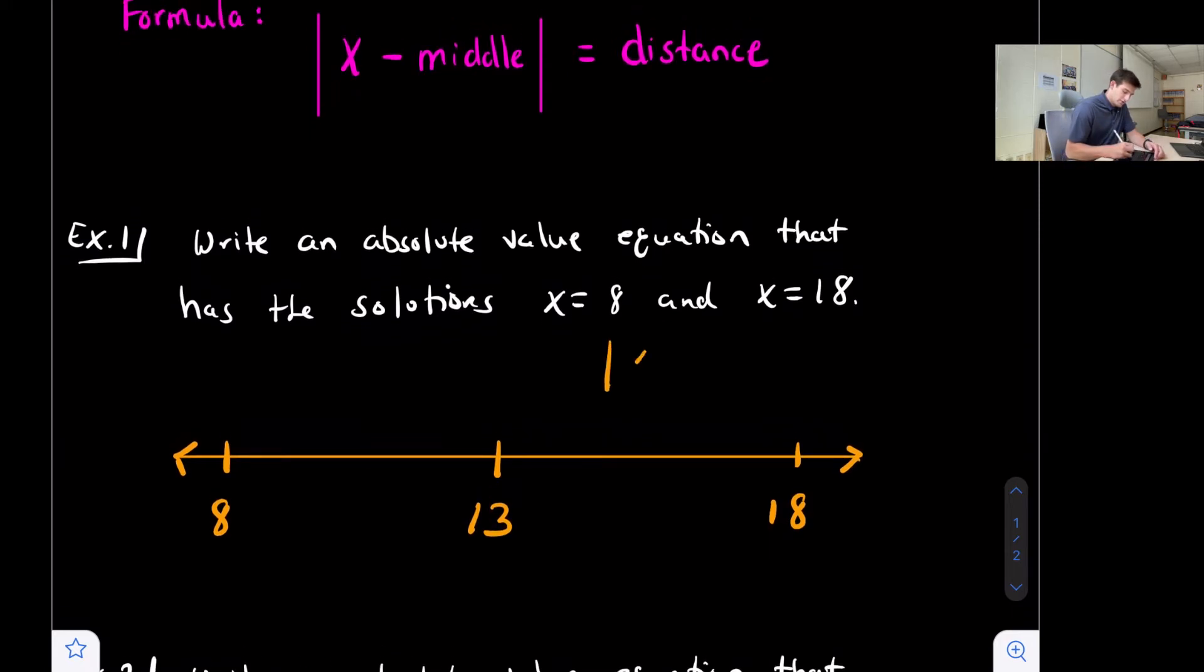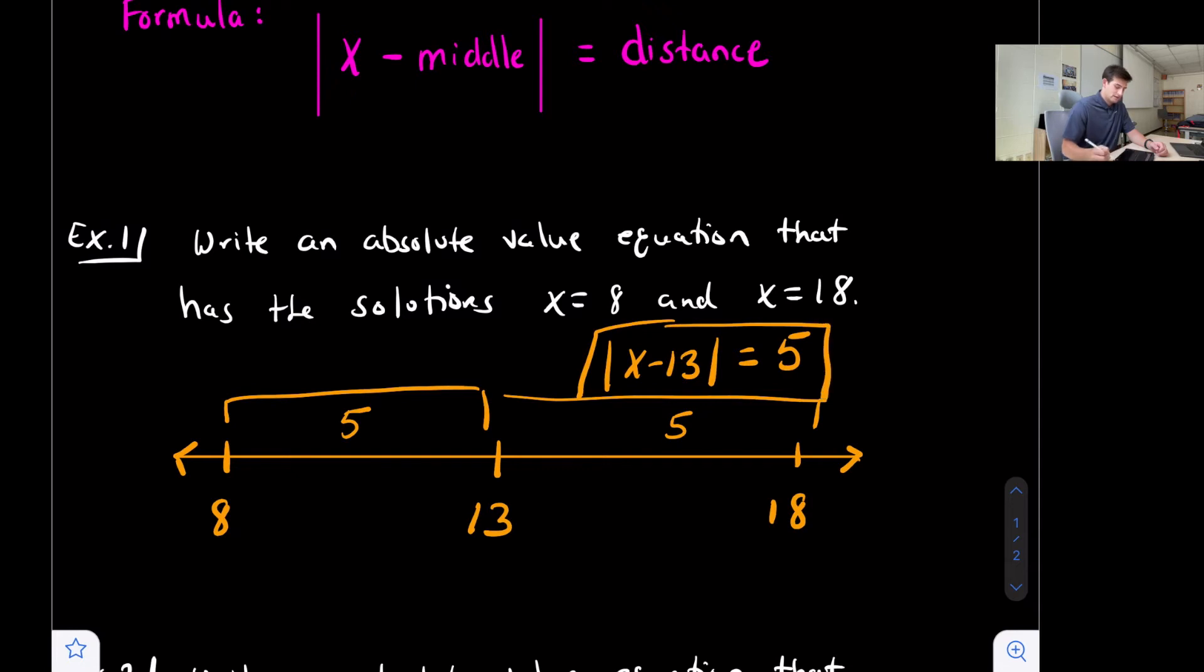So right now we have absolute value of x minus 13, and now we need to find the distance that 8 and 18 are from 13. That would be five units. So we would say the absolute value of x minus 13 equals 5, and that would be our absolute value equation for example one.